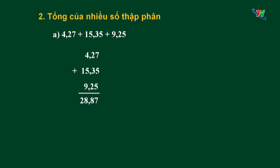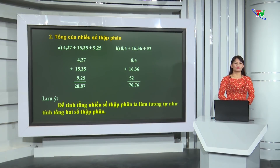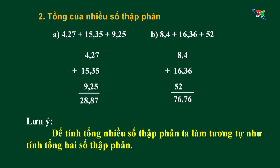Cô chắc chắn rằng rất nhiều bạn có kết quả đúng rồi. Chúng ta chuyển sang ý tiếp theo B nhỏ: 8,4 cộng 16,36 cộng 52. Tương tự như ở ý A, chúng ta có thể dễ dàng tìm được kết quả của ý B. Chúng ta đặt tính, sau đó thực hiện cộng như cộng 2 số thập phân. Kết quả cuối cùng tìm được là 76,76. Qua 2 phép tính vừa rồi, chúng ta nhận thấy rằng để tính tổng nhiều số thập phân, ta làm tương tự như tính tổng 2 số thập phân.